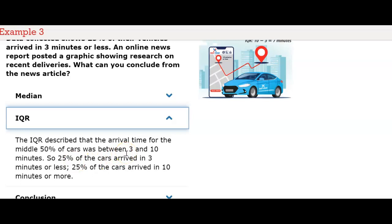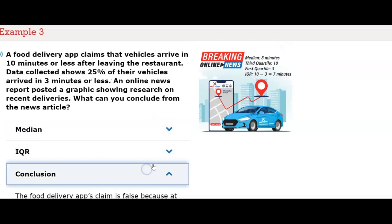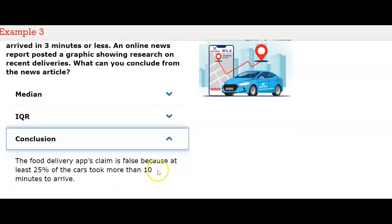The IQR described that the arrival time for the middle 50% of the cars was between 3 and 10 minutes. So, 25% of the cars arrived in 10 minutes or more. Conclusion, the food delivery app's claim is false because at least 25% of the cars took more than 10 minutes to arrive.